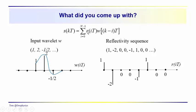We left you with this convolution problem. We've got the wavelet that we were using last time. This is our W over here, defined by amplitudes 1, 2, minus 1½, zero for the first and second samples. And then this is our reflectivity sequence that we're working with. We asked you to convolve this wavelet with this reflectivity series in order to come up with the signal.